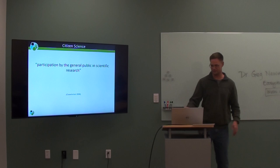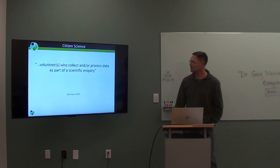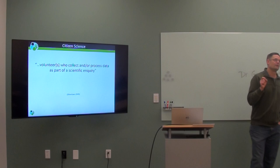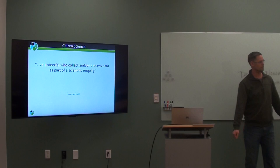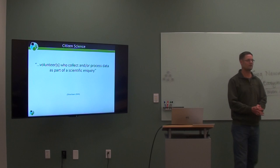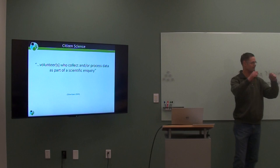We like to think of citizen science as participation by the general public in scientific research — it's that simple. Others define it more narrowly as volunteers who collect and/or process data as part of a scientific inquiry. For example, there was a volunteer in Wisconsin — a wheelchair-bound seamstress — who couldn't go out and make observations, so she sewed nets for controlling invasive purple loosestrife.